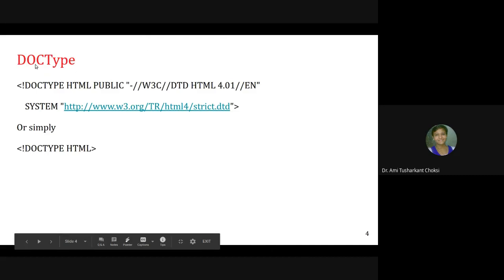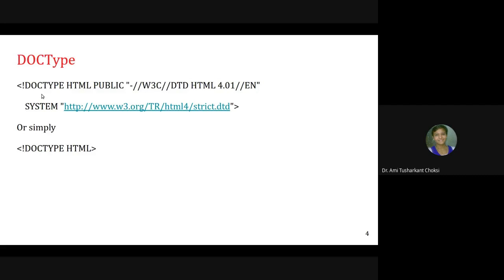We have talked about DOCTYPE. DOCTYPE is document type and it is written as less-than exclamation DOCTYPE HTML. If you want to write it fully, you can write DOCTYPE HTML PUBLIC along with the system text, providing the DTD — that is, document type definition — which specifies how the structure of the document should be, given in the rules specified in the streak.dtd file.